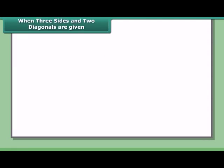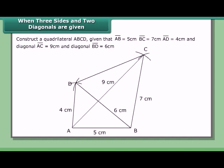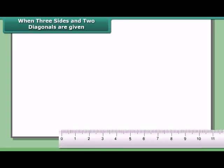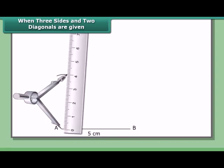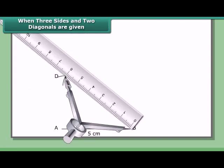When three sides and two diagonals are given, construct quadrilateral ABCD where AB = 5 cm, BC = 7 cm, AD = 4 cm, diagonal AC = 9 cm, and diagonal BD = 6 cm. Steps: draw AB = 5 cm. With A and B as centers and 4 cm and 6 cm as radii respectively, draw arcs to cut each other at point D.